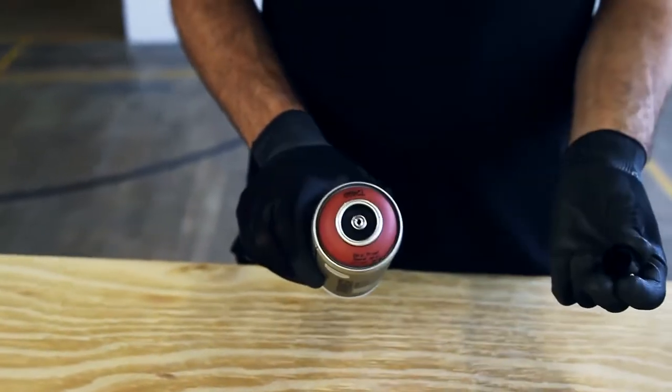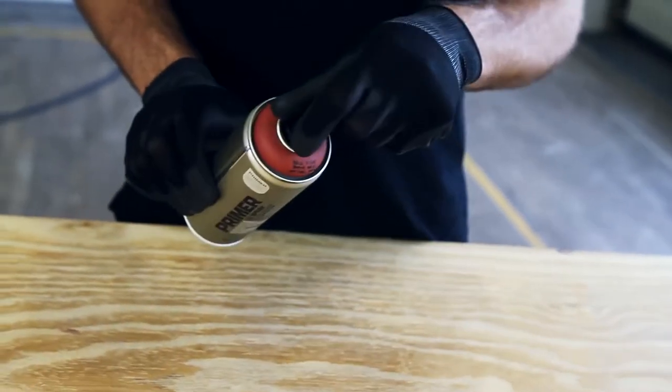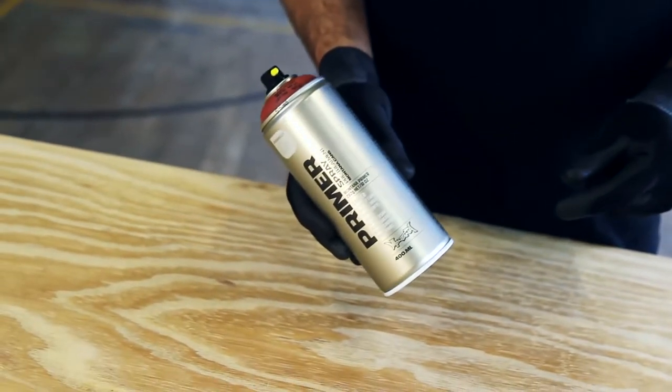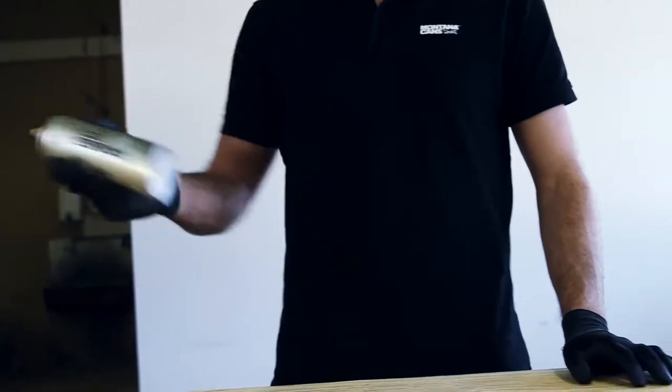Remove the safety ring by removing the nozzle and turning the can upside down, allowing the ring to fall out. Shake can well for two minutes.